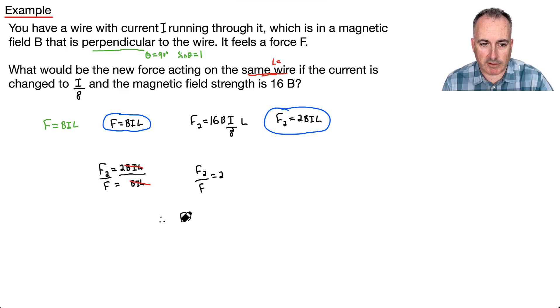What does that mean? That means therefore, if I want to get F2 by itself, what do I do? I multiply both sides by F, so the F comes to the top. I can say F2 equals 2F. In other words, the new force is twice what the old force was. There we go.